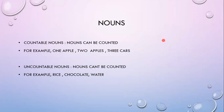First of all, we need to know what countable nouns are. Countable nouns هي الأسماء المعدودة — nouns that can be counted. مثلاً أنا عندي طاولة، بقدر أعدها، هاد اسم معدود. بقدر أحكي طاولة، طاولتين، ثلاث طاولات. For example: one apple, two apples, three cars. بقدر أعد التفاح وبقدر أعد السيارات، فهاد اسم معدود — countable nouns.